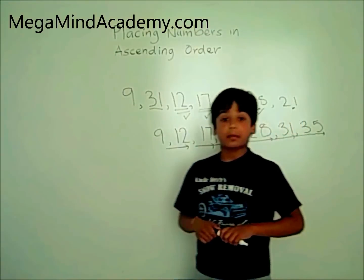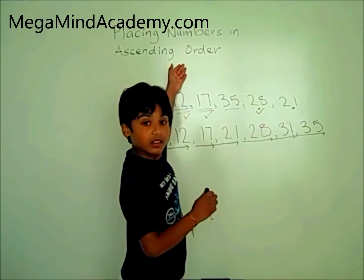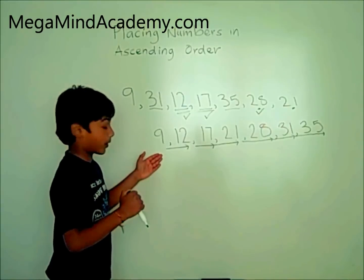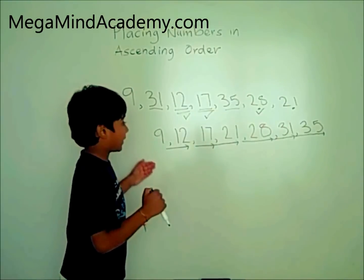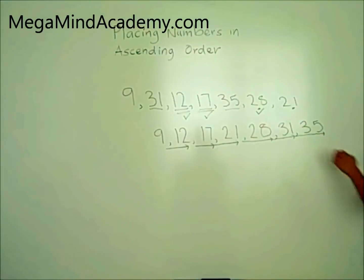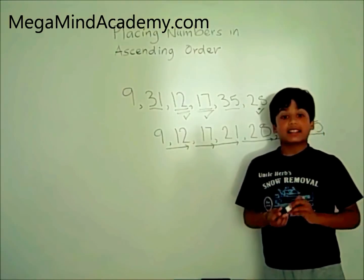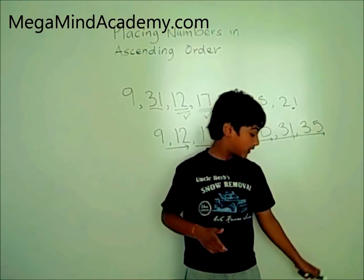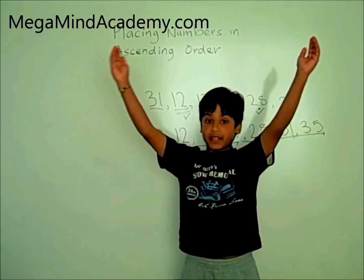Today we learned about placing numbers in ascending order. This is called ascending order, where 9 is the smallest number and it goes all the way to the biggest number which is 35. Ascending order starts from a small number and becomes bigger and bigger, gradually reaching the biggest number.